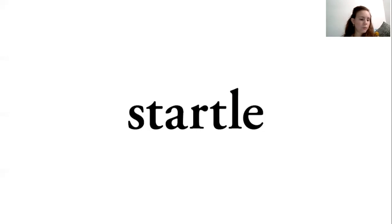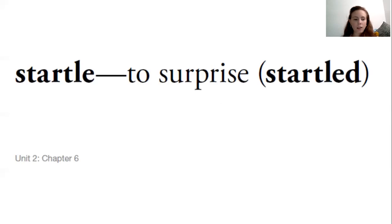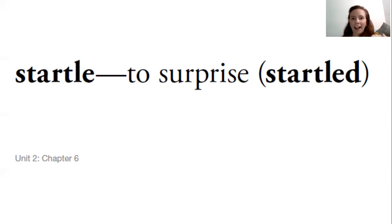This next word is startle: S-T-A-R-T-L-E. That A is controlled by the R and says 'ar' together, and then L and E together say 'le' — that's our suffix. Startle — that's two syllables. Startle just means to surprise. And if it's already happened, we add a suffix ED to show that you have been startled. So if I am working really hard and someone walks up behind me and starts talking and it makes me jump, I can say, 'Oh, you startled me.' For my little picture, let's just put a little emoji face that's surprised.